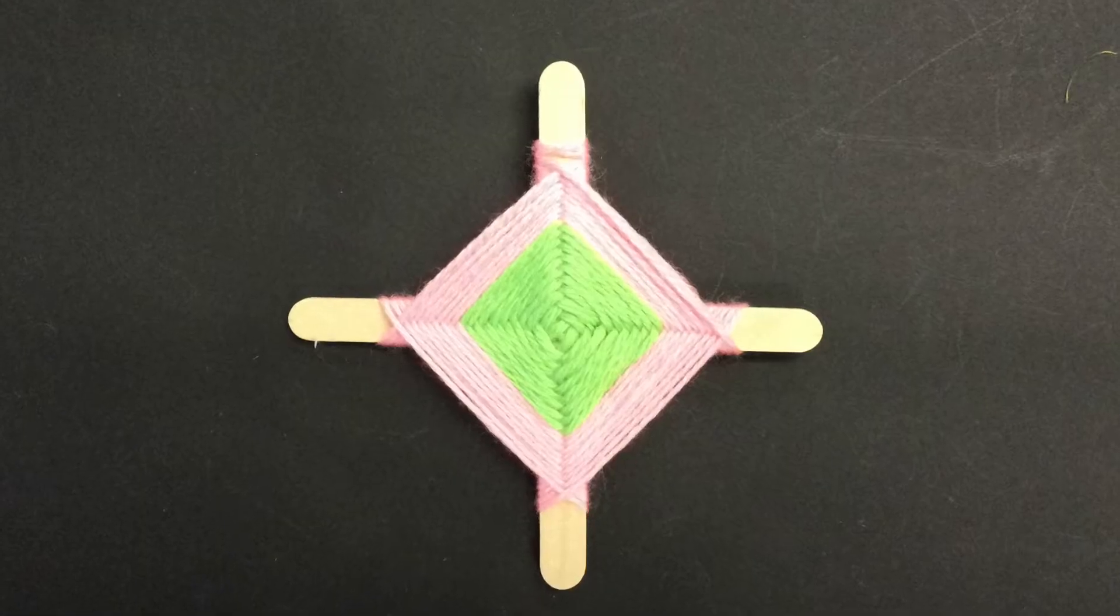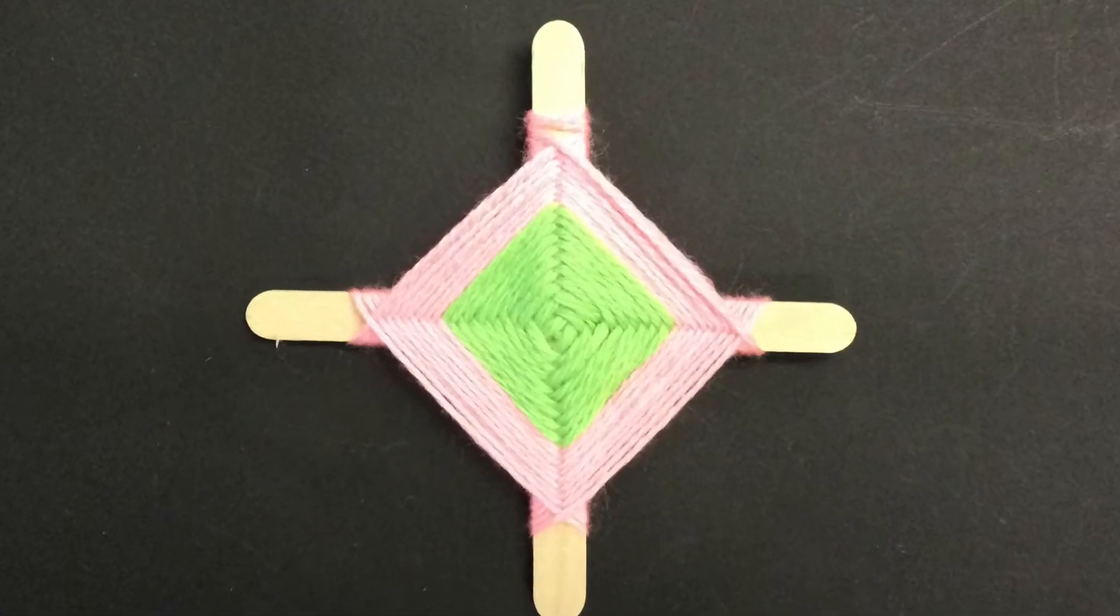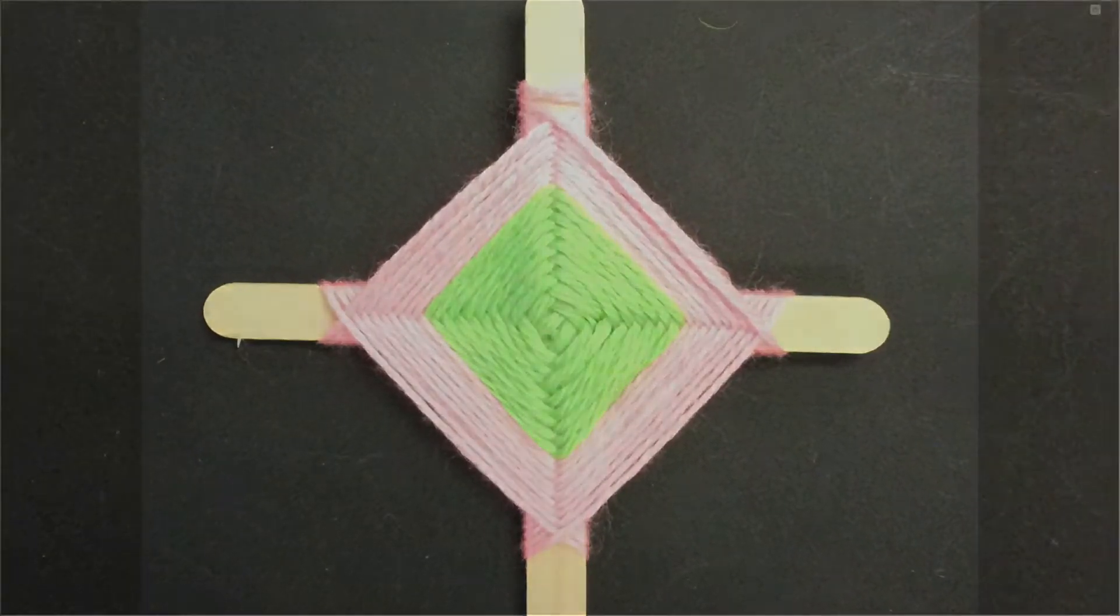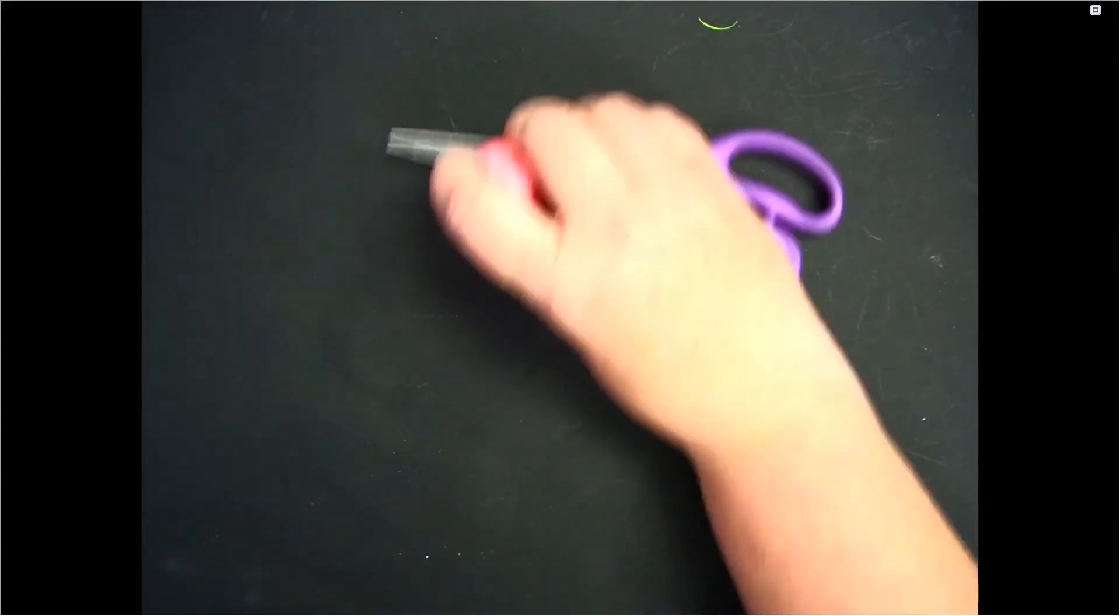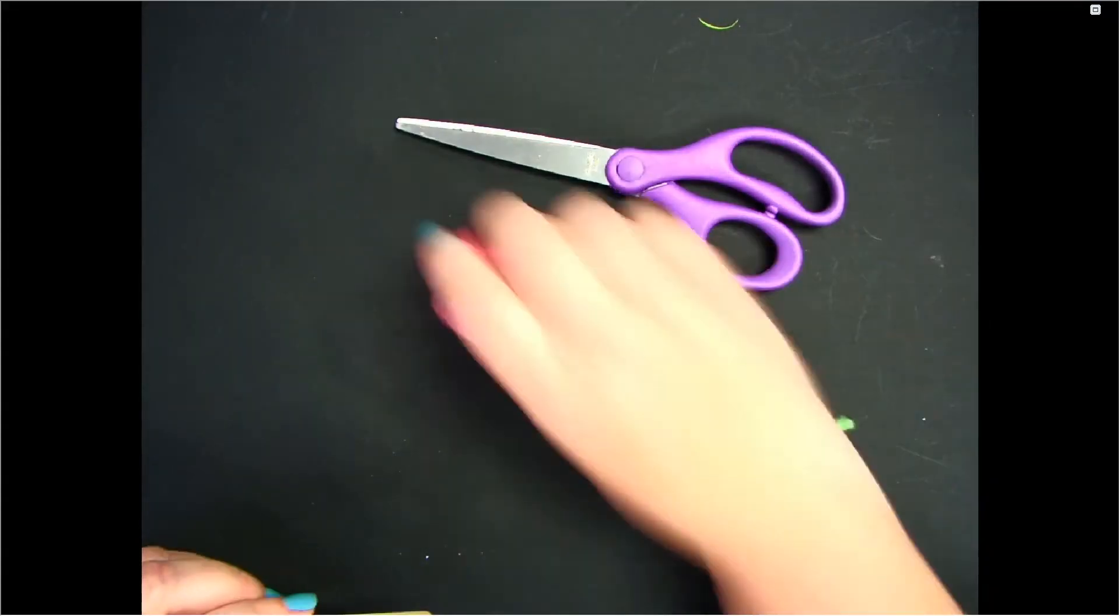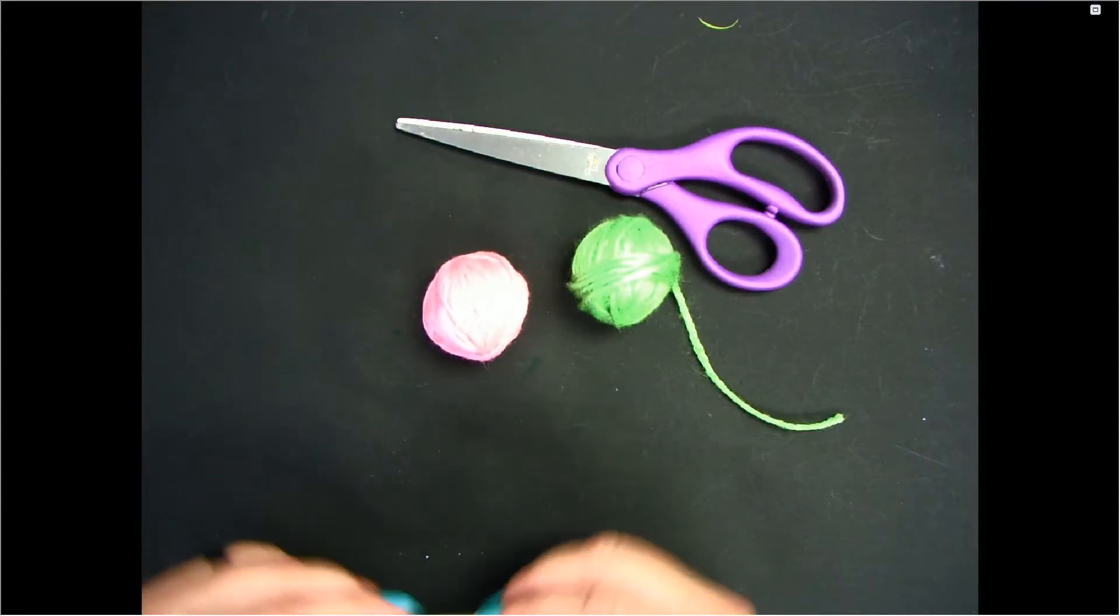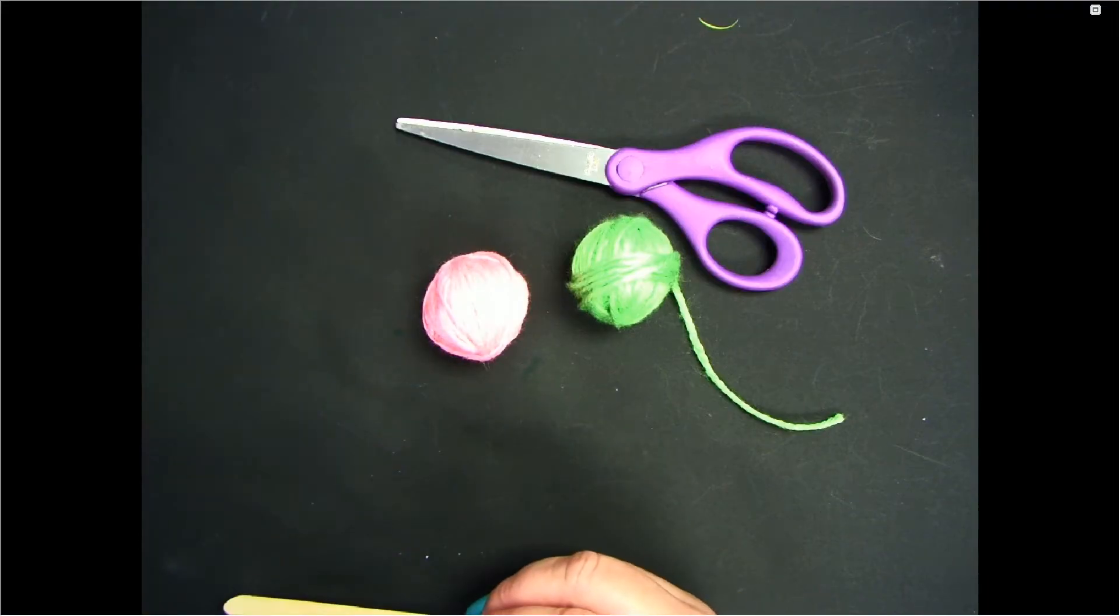Hello Little Artists, today I'm going to show you how to complete a weaving project called a God's Eye. For this project you will need some scissors, some yarn, you can have as many colors as you would like, and you will also need two popsicle sticks.